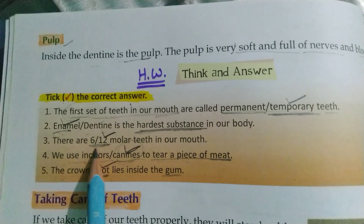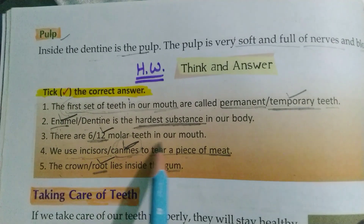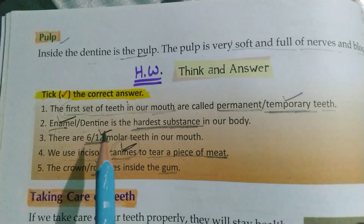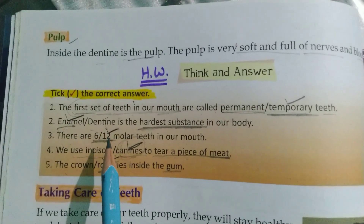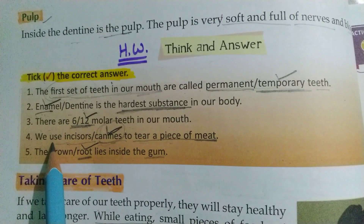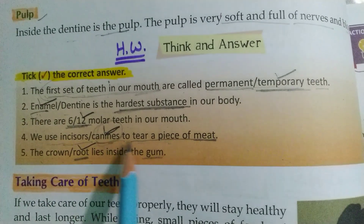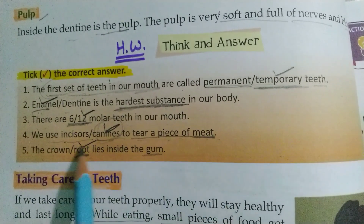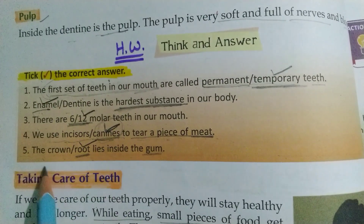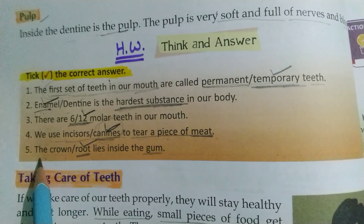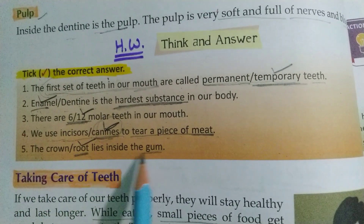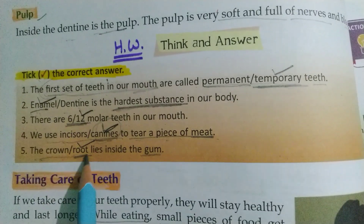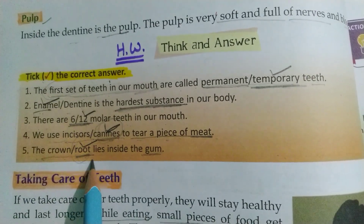There are dash molar teeth in our mouth — 12. We use canines to tear a piece of meat. Kya use karte hain? Canines. The dash lies inside the gum. Gum ke andar kya hote hain? Crown ya root. Kya hai answer? Root.